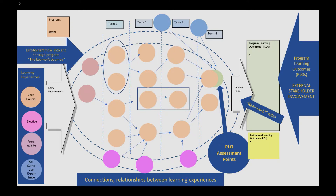What we're saying in this map is that for this mock version of a program, all of the program learning outcomes are assessed in this final course, which might be a capstone or practicum course where students have an opportunity to synthesize and integrate all their learning, demonstrating that they've achieved the program learning outcomes. The maps are not all like that, but I just wanted to make this first one easy to see.